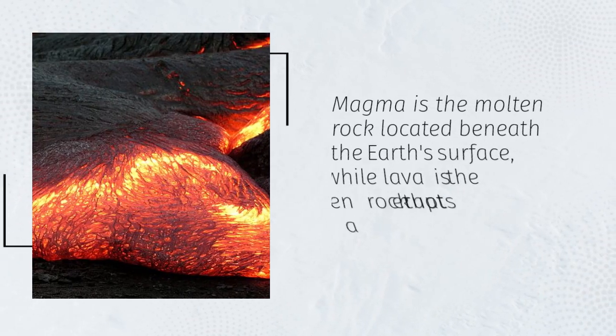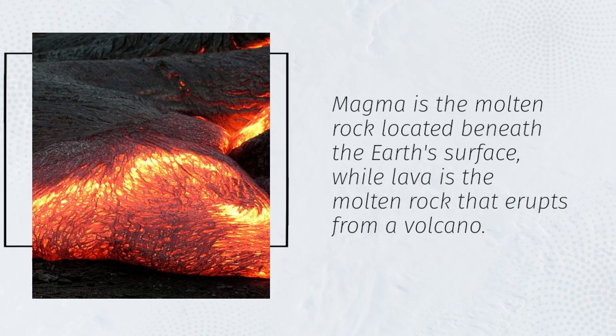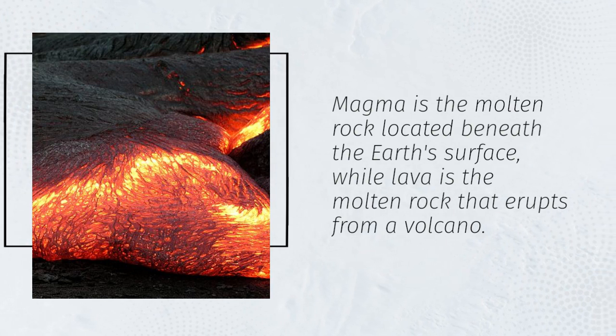Magma is the molten rock located beneath the earth's surface, while lava is the molten rock that erupts from a volcano.